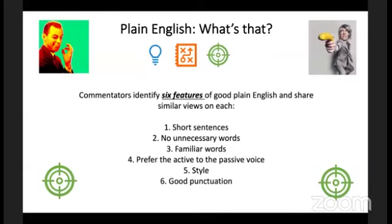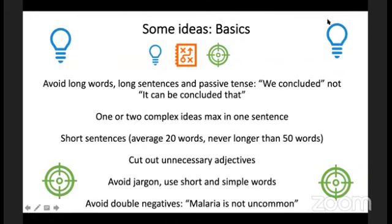This is a big difference from many other languages — in French or Russian, academic papers are mostly read by native speakers. So let's avoid long sentences and the passive tense. Write 'we concluded' not 'it can be concluded that.' One or two complex ideas maximum per sentence. The average effective length for an English sentence is about 20 words — never longer than 50. One topic per sentence.